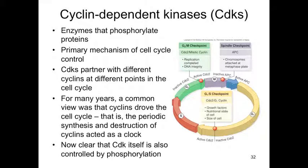However, CDKs have to partner with different molecules called cyclins at different points in the cell cycle. So although there might be a lot of cyclin-dependent kinase around during G1, until it's filled with enough cyclin, the CDK is not yet active. Once the concentrations of cyclin increase and bind to the cyclin-dependent kinases, the switch is moved and we can go on into the next section.